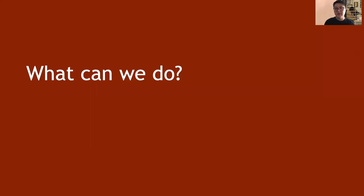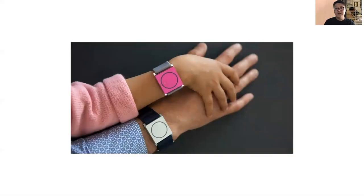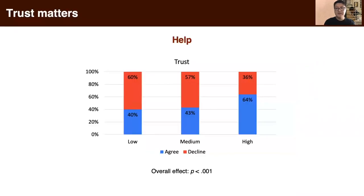Now we know that mood, location, and presence of others all influence users' willingness to use video authentication. How can we make sure they are in the right mood at the right time? We could probably use mood and location detection on wearable devices. Wearable devices already have the ability to detect location, and many can detect mood as well. So future video-based social authentication systems could integrate with wearable devices.